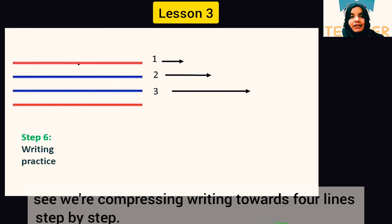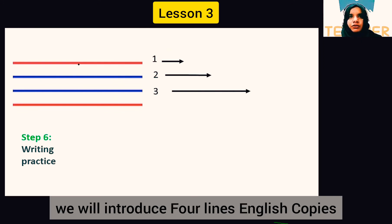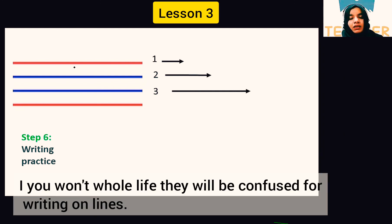We are reducing writing size progressively — from big hollow, to blocks, to CD lines, to plain lines, whiteboards, blackboards, Montessori boards, and A4 sheets. After that, introduce English 4-line paper. Don't give 4-line paper too early — follow the steps. If you skip steps, your child will be confused and their writing will never improve.